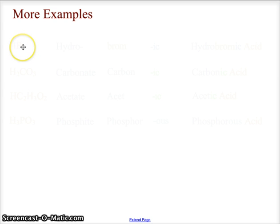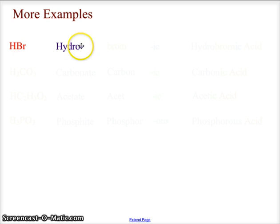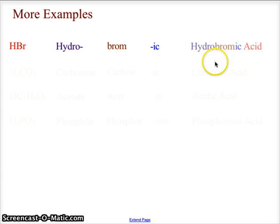Let's try some practice examples. First, HBr — go ahead and write out what you think the name is. This is a binary acid, so we always start with 'hydro'. We use the root from the nonmetal bromine, which is 'brom', and it always ends in '-ic' for a binary acid, giving us hydrobromic acid.